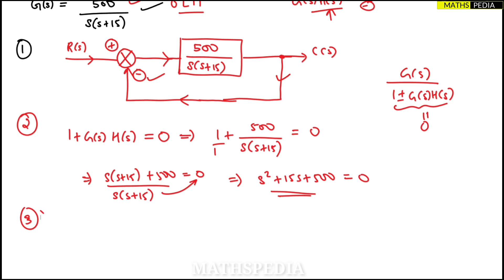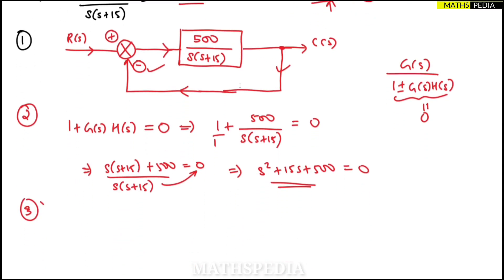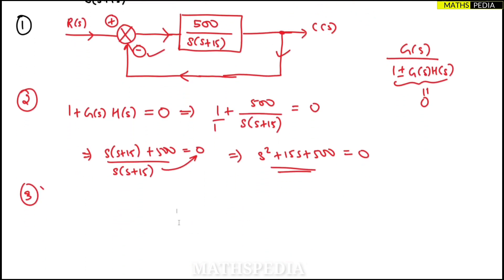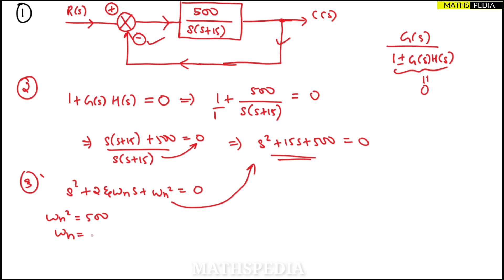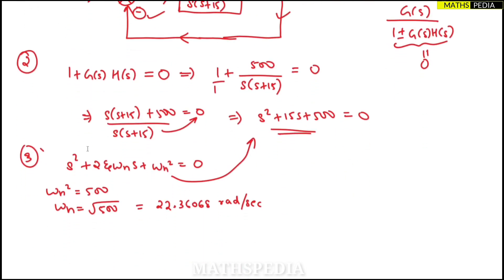For the third part, we need to find damping ratio zeta and natural frequency omega n. We compare our characteristic equation with the standard form of a second order system: s² plus 2·zeta·omega_n·s plus omega_n² equal to zero. Comparing, omega_n² equals 500, so omega_n equals the square root of 500, which is approximately 22.3606 radians per second.